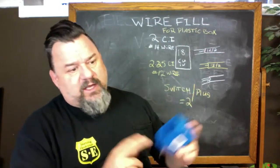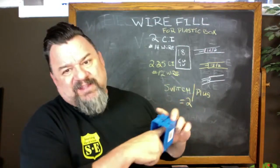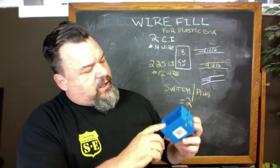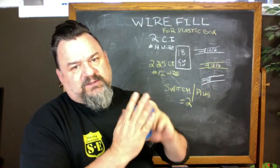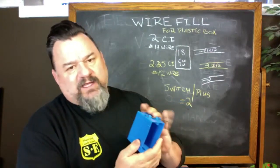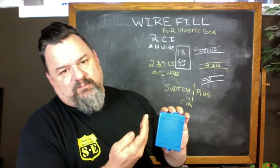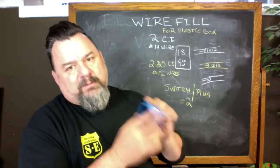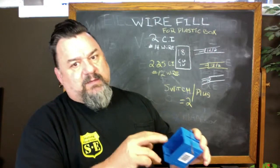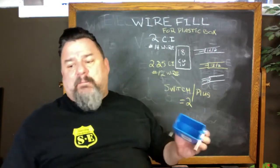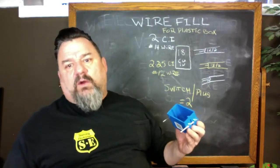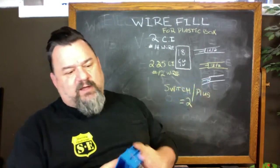To get started, every box has printed on the inside how many cubic inches it is. This one in particular, they come bigger, but this is a basic plastic residential box - it's 18 cubic inches. That's how big it is or how many wires can go in there, that's how they base it on.